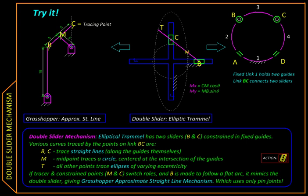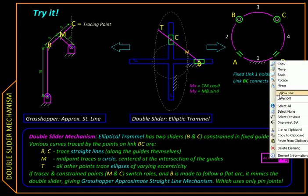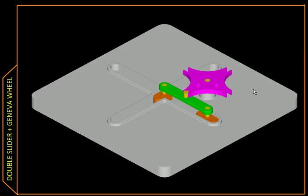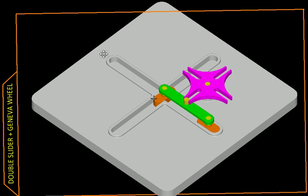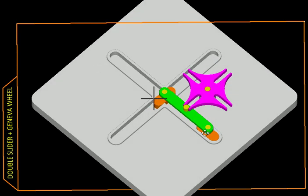Let us now watch this mechanism in 3D and in action by following this link here. So this is a double slider. This is the cross slot in which these two orange colored sliders will be sliding and the green link is connecting these two sliders.